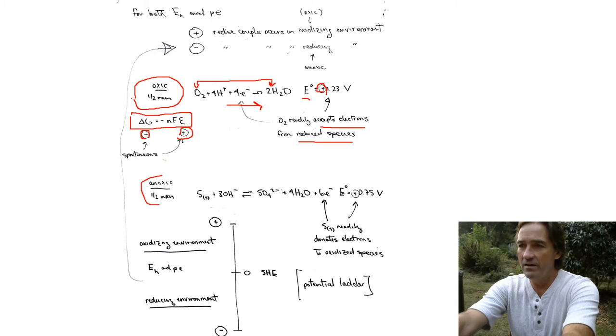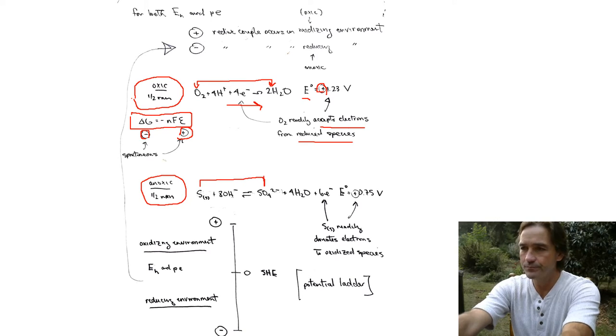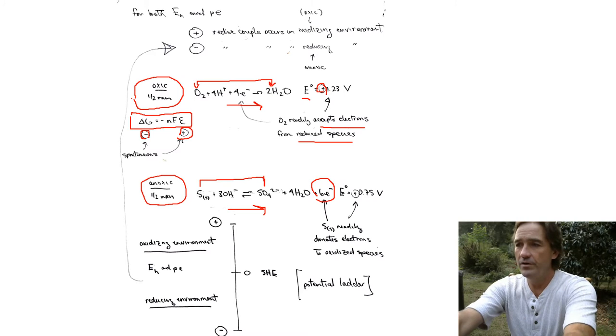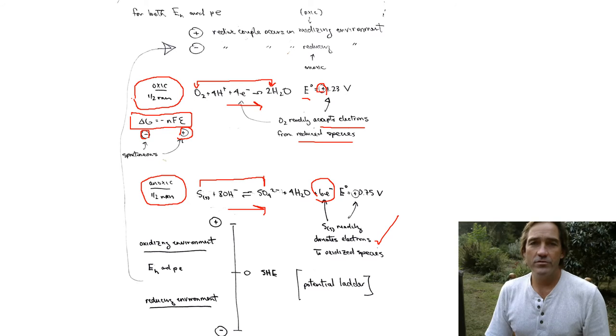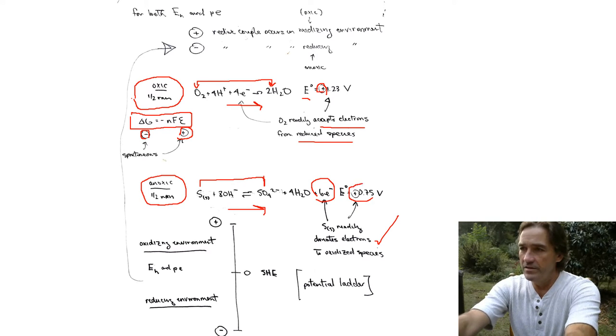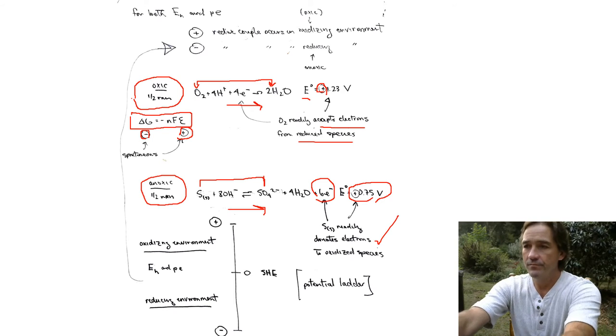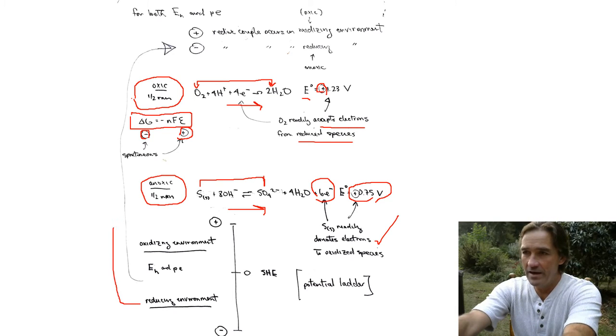Now let's look at an example in an anoxic situation, such as sulfur and sulfate. They are a redox couple, and I have it written as an oxidation. I have it written such that electrons are given up. Sulfur would like to donate electrons to some other species. Written in this direction, this reaction is also positive. So this is a reaction that is spontaneous and creates conditions, creates an environment where there are lots of electrons around to reduce things. This would create a reducing environment.